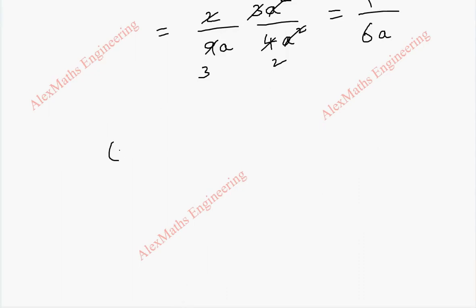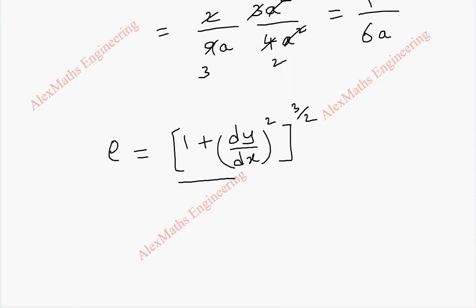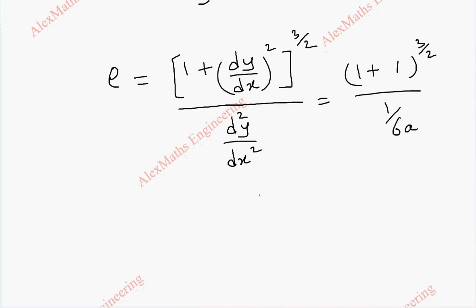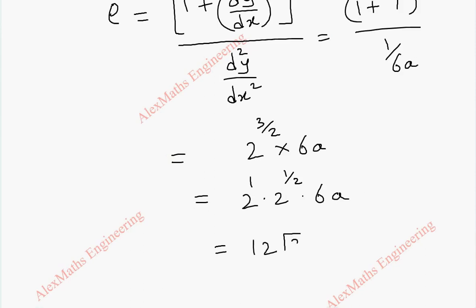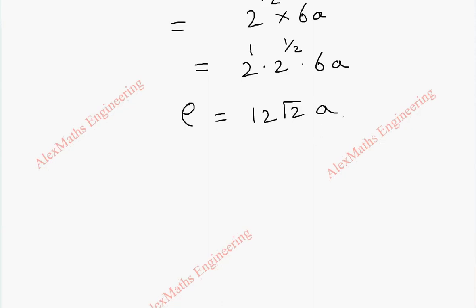The radius of curvature formula is ρ = [1 + (dy/dx)²]^(3/2) / |d²y/dx²|. Since dy/dx = 1, we get (1 + 1)^(3/2) / (1/6a) = 2^(3/2) · 6a. Since 2^(3/2) = 2 · √2, this gives ρ = 12√2 a at the point (3a, 2a).